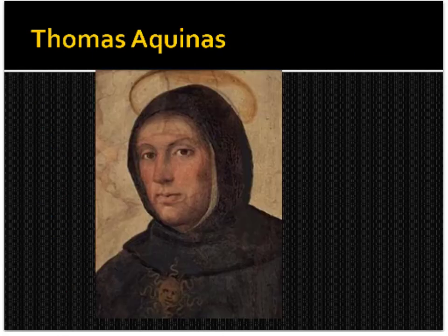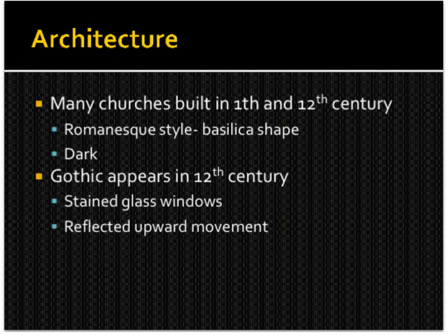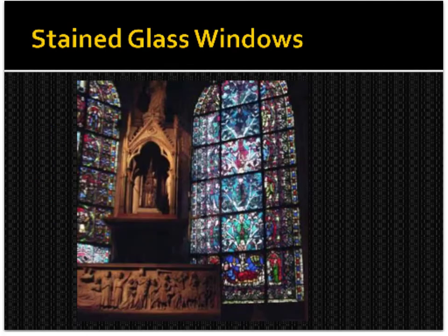Here is an image of St. Thomas Aquinas. For architecture, many churches were built in the 11th and 12th centuries in the Romanesque style — a basilica shape — and they were dark. Another style of architecture is Gothic, appearing in the 12th century, featuring stained glass windows that reflected an upward movement towards the heavens. These are stained glass windows — notice the detail. Many churches still have stained glass windows today.